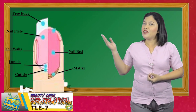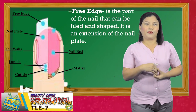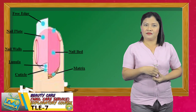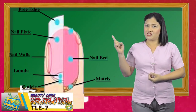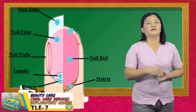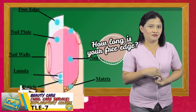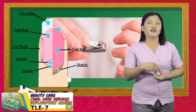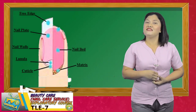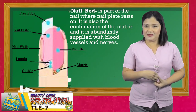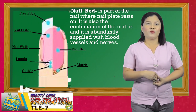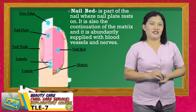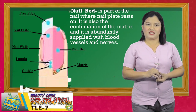Our next part is the free edge. Free edge is the part of the nail that can be filed and shaped. It is an extension of the nail plate. Look at the illustration to locate where free edge is. How long is your free edge? I hope it's not too long. Just remember, trim regularly your nails. The next part is nail bed. Nail bed is the part of the nail where nail plate rests on. It is also the continuation of the matrix and it is abundantly supplied with blood vessels and nerves.